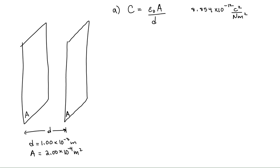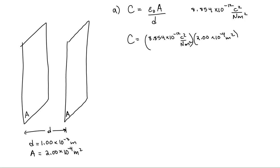For part A, this is just plug and chug — we have all the information we need. The permittivity of free space is 8.854 times 10 to the minus 12 coulombs squared per newton meters squared. The area of a plate is 2.00 times 10 to the minus 4 meters squared, and the separation distance between the plates is 1.00 times 10 to the minus 3 meters.